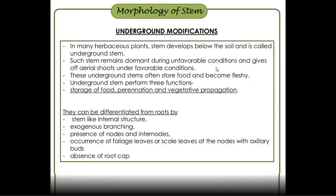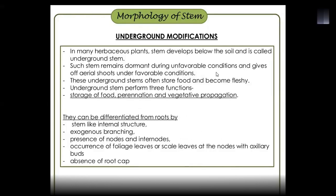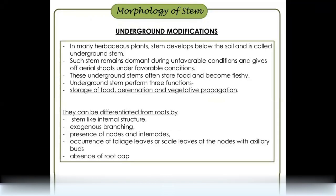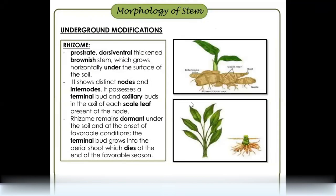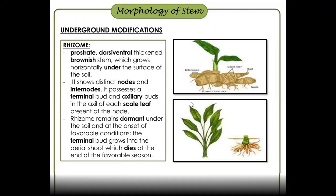We have to differentiate underground stem branches using internal structure. The first underground stem modification is the rhizome. For example, ginger.